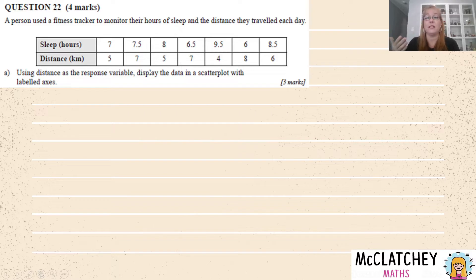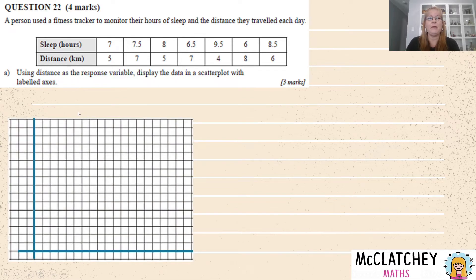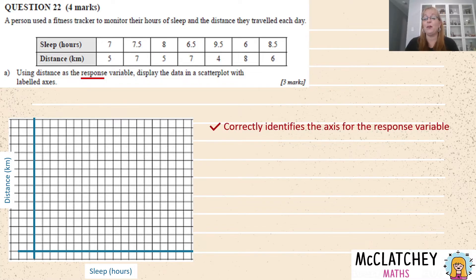They're going to ask us to draw a scatterplot here with labelled axes. Now because they've told us distance is the response variable we know that straight away that's going to go on to the y-axis. So the order here this is the x-axis and this is the y coordinates down here. So that's helpful information. Let's get started by drawing in some axes here and we're going to label up those using distance as our response variable so we can see we put that on the y-axis there and this is our explanatory variable down here. Easiest way to remember is explanatory starts with e-x, x for x-axis. So that's our first mark that we've been awarded there correctly identifying the correct axis for the response variable.